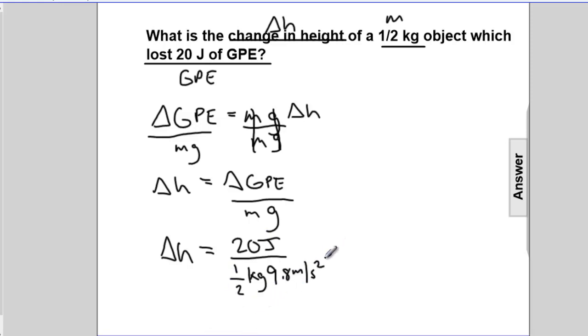Before we reveal the answer, let's verify that the units work out to be meters for Δh. The units for joules are kilograms meters squared per second squared: kg·m²/s². These units for joules are divided by kilograms,